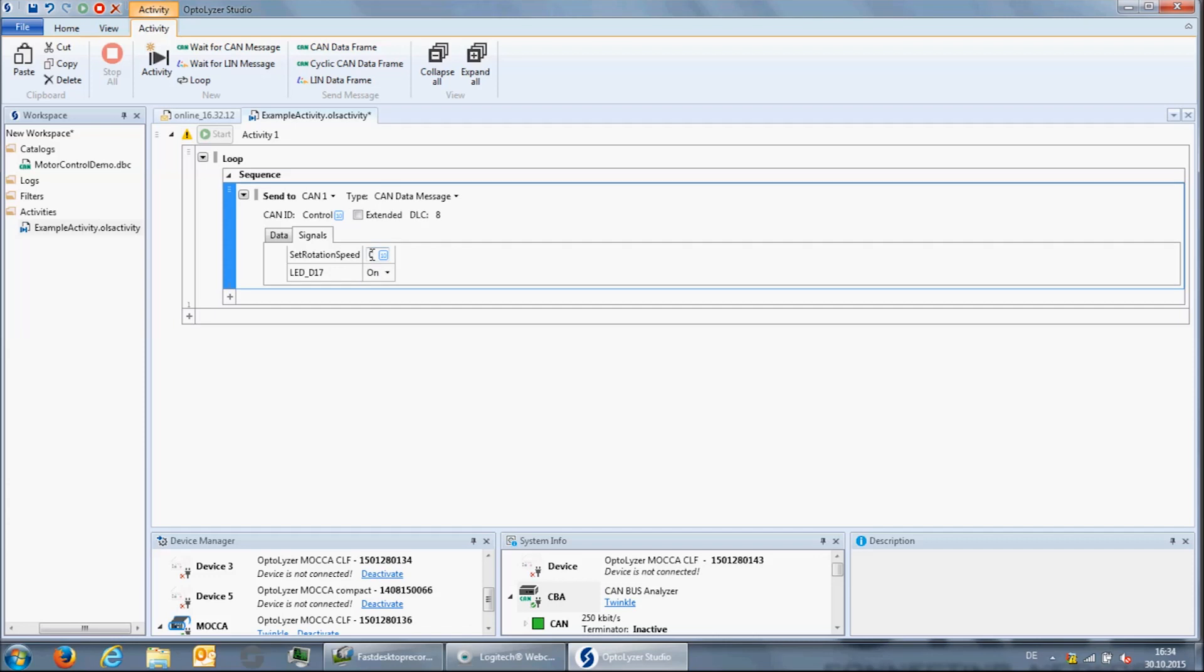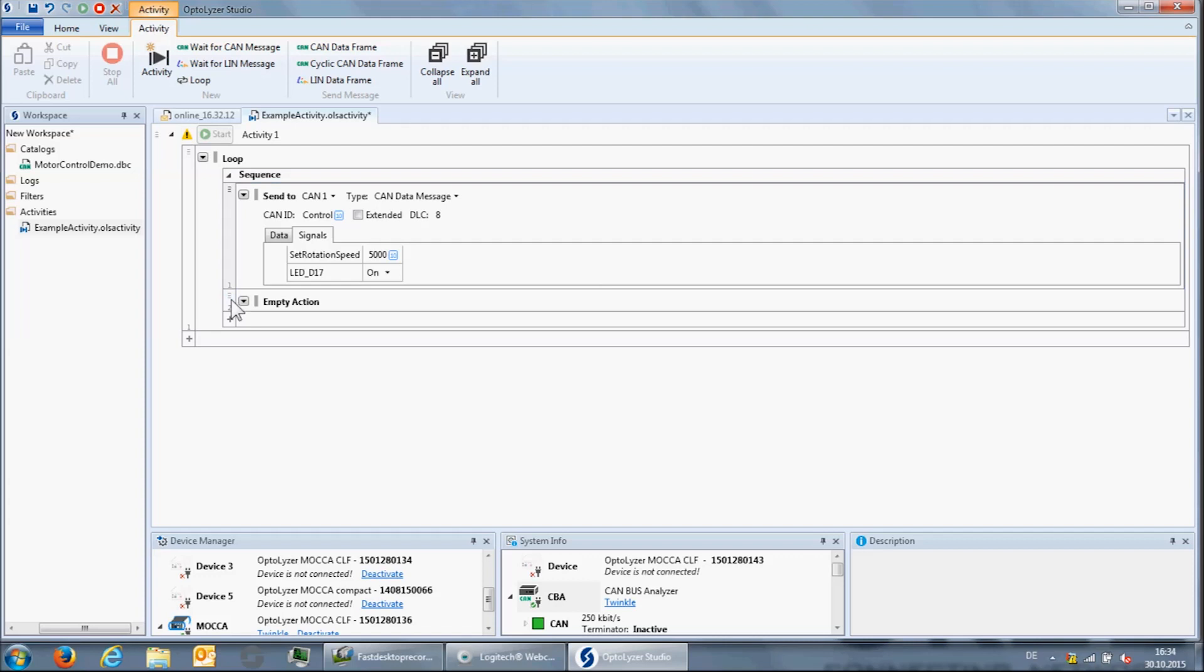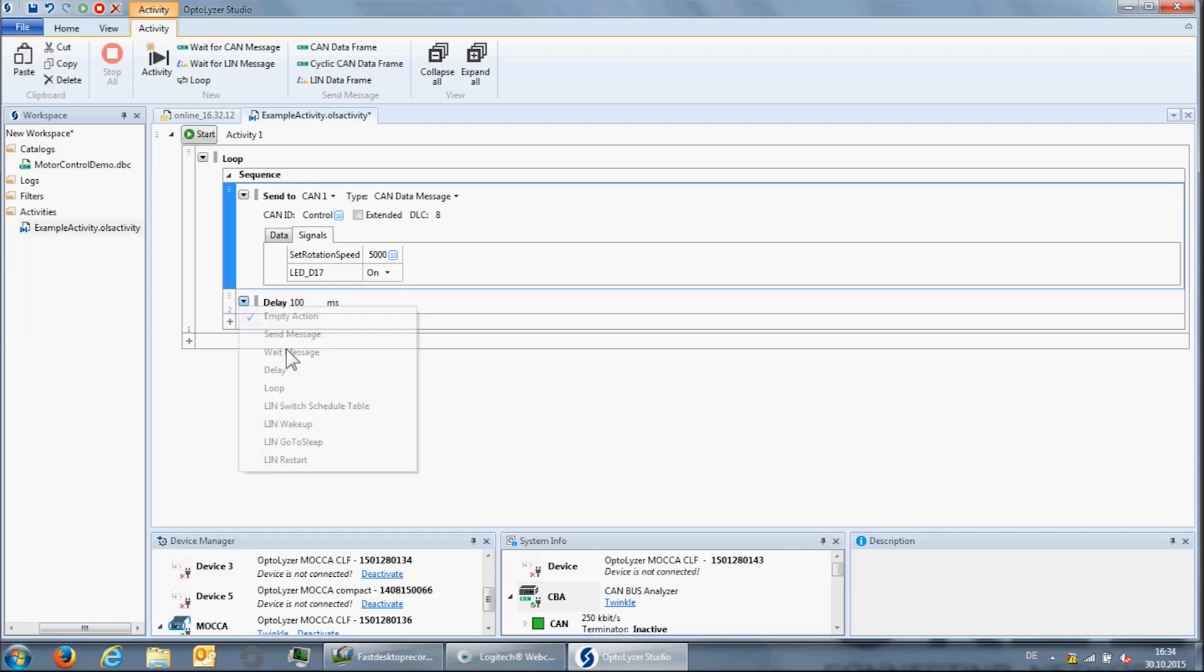In this case, we set the rotation speed of the motor to 5000 revolutions per minute. In order to specify the interval between the messages, we can add a delay, which here is one second. Then, we can start the activity.